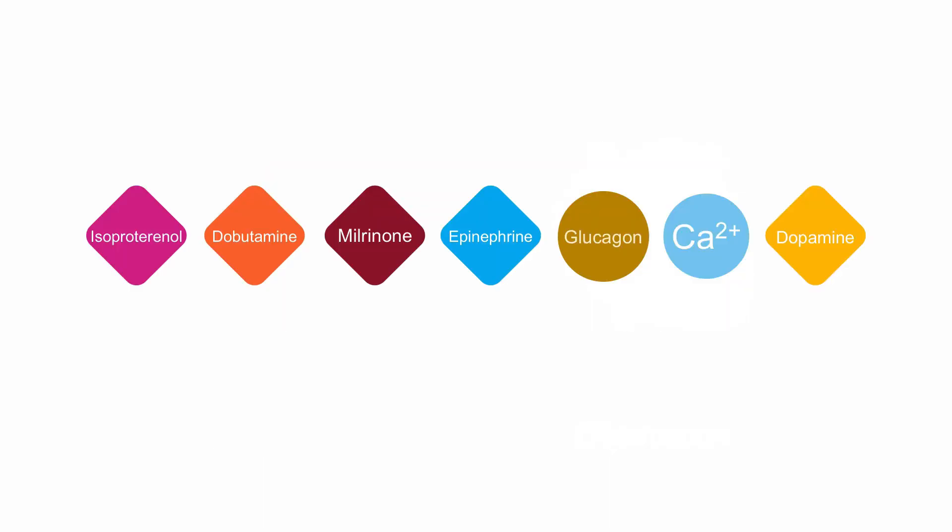The options for inotropic medicines for improving stroke volume are essentially the same as for increasing heart rate. Dobutamine is likely the first agent for inotropy for most providers.